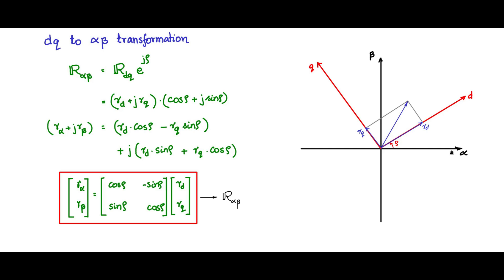The resultant can be resolved along the alpha-beta coordinate axes. Projecting the resultant onto the alpha axis gives r_alpha, and projecting onto the beta axis gives r_beta. So r_alpha and r_beta are the outputs with r_d and r_q as the inputs — that is what this transformation has done. The angle rho between the dq coordinate system and the alpha-beta coordinate system must be known to apply this transformation.